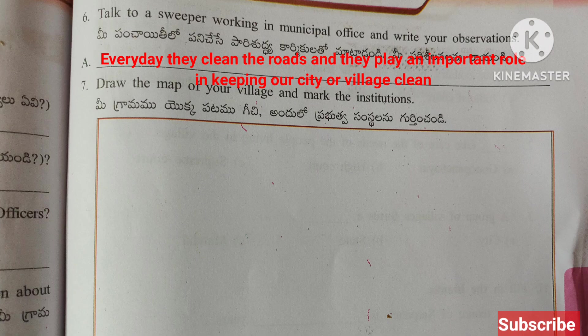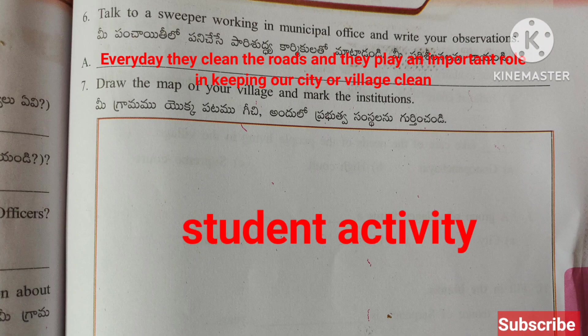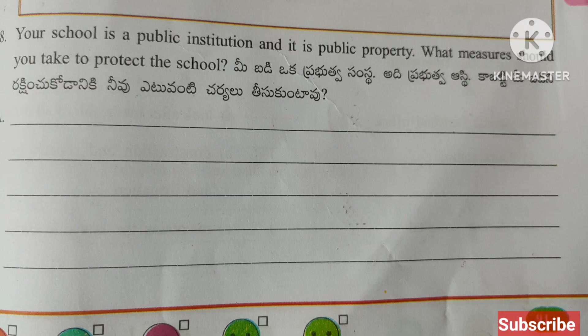Seventh question: Draw the map of your village and mark the institutions. This is a student activity — they have to draw their village map and mark the main institutions.